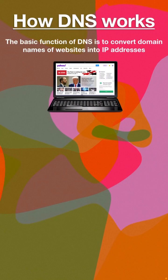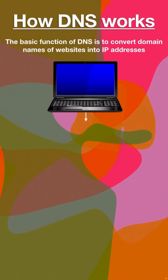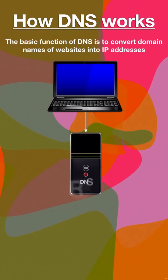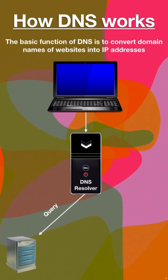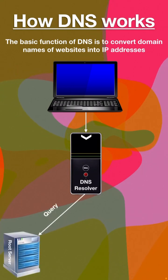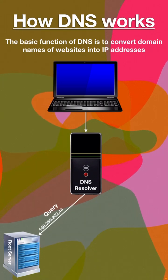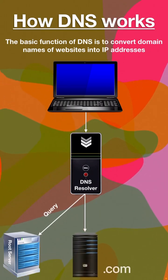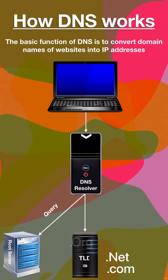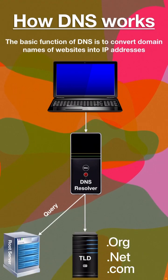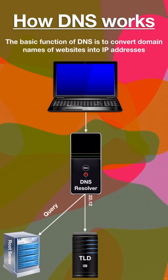If the requested address is not found in its database, then the DNS contacts a DNS resolver, which then sends the query to a root server. Root server responds to the query by returning the IP address of a TLD server. TLD stores the information for its domains and returns the IP address of an authoritative name server to the DNS resolver.